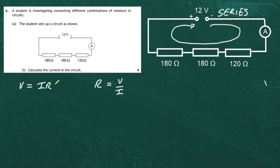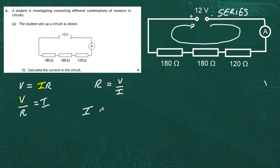Ohm's law properly stated is R equals V divided by I, but we want to find the current in the circuit so we have to rearrange this equation. Dividing both sides by R, the total resistance of the circuit, we get that I equals V divided by R. So our final equation will be: the current in the circuit is equal to the supply voltage of 12 volts divided by the total resistance RT.